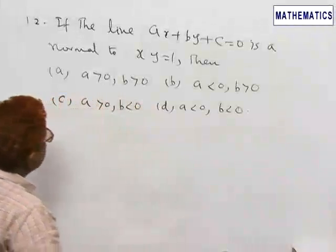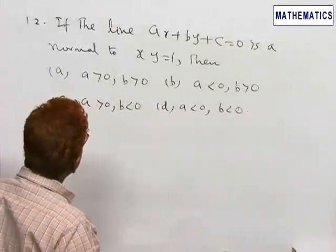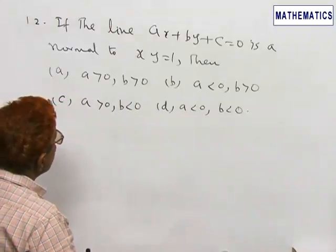Problem 12 is, if the line ax + by + c = 0 is a normal to xy = 1, then...